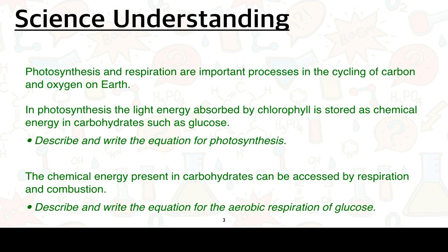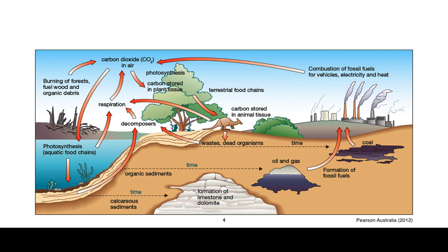Photosynthesis and respiration are important processes in the cycling of carbon and oxygen on Earth. In photosynthesis, the light energy absorbed by chlorophyll is stored as chemical energy in carbohydrates such as glucose. You'll need to know how to describe and write the equation for photosynthesis. The chemical energy present in carbohydrates can be accessed by respiration and combustion. This diagram summarises the cycling and recycling of important elements needed for life — namely, this is what we call the carbon cycle, but it also incorporates the cycling of oxygen.